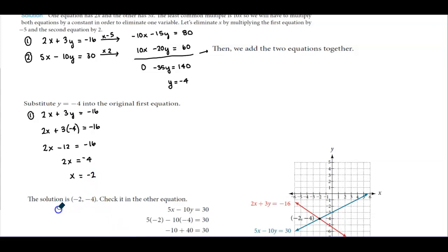The solution is (negative 2, negative 4). We can check it in the other equation: 5x minus 10y equals 30. So 5 times negative 2 is negative 10, and negative 10 times negative 4 is positive 40. Negative 10 plus 40 is 30, which checks. If we graph both these equations, we would see that they intersect at one point, which is the solution we have.